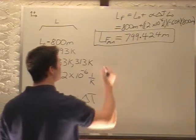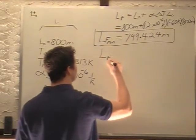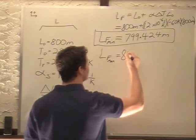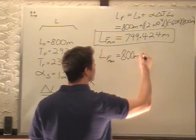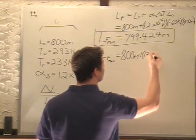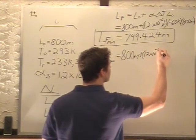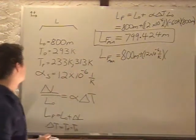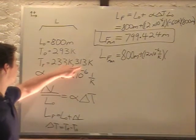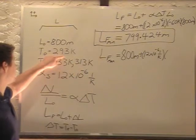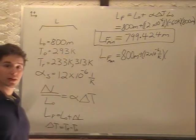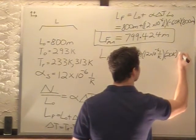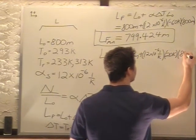And we'll do exactly the same for the maximum, L f max. We still have the 800 meters as our initial length, 12 times 10 to the minus 6, 1 over Kelvin. Now the difference this time is from 313 to 293, so this time it's positive 20 Kelvin. Then again, 800 meters.